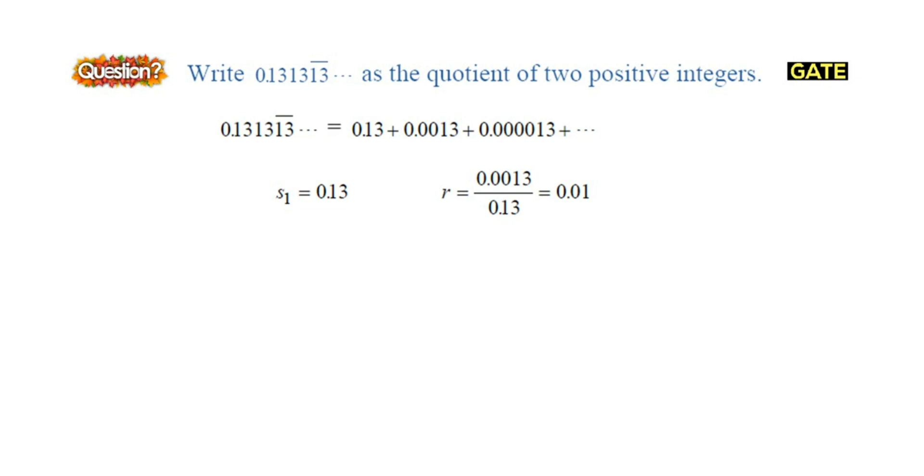Here the ratio is less than 1, so we can use the infinite geometric series formula. We have the equation s∞ = s₁/(1-r), where s₁ is the first term of the series and r is the common ratio. That is 0.13 divided by 1 minus 0.01.